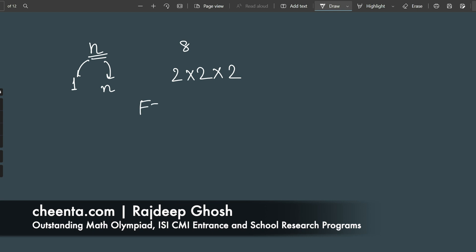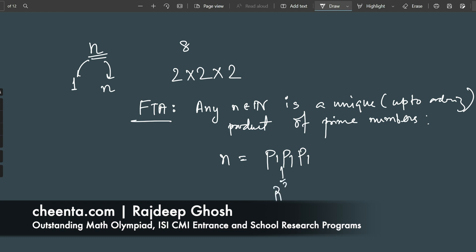The fundamental theorem of arithmetic, FTA, not to be confused with the fundamental theorem of algebra, says that any natural number n is a unique up to ordering product of prime numbers. This means you can write any natural number n as some product. Usually it's written as P1 cubed, but I'm just writing it as P1, P1, P1, P2, P2, and so on.